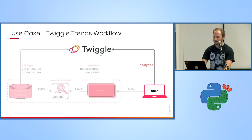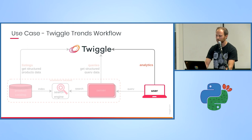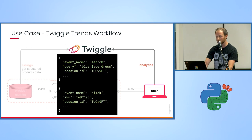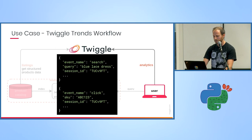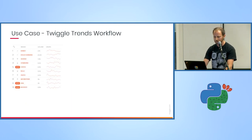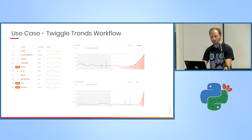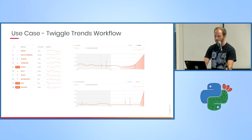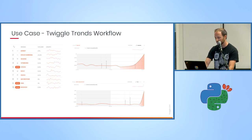So how do we use Luigi at Twiggle? In addition to our main product, we have an analytics product. We read the customer's logs, run some anomaly detection algorithms on them, and give the customer insights such as the different behavior of different brands — who went up, who went down — and examples of trending products. For instance, 'Sun Hat' increased in the last day.